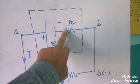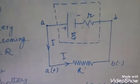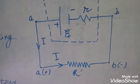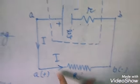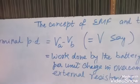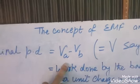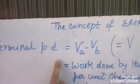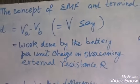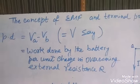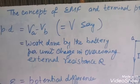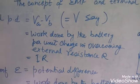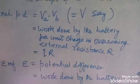Now if we apply Ohm's law: since the potential difference over the resistance R is V, which is Va minus VB — that is the terminal potential difference of the cell — by definition this terminal potential difference is the work done by the battery per unit charge in overcoming external resistance R. In accordance with Ohm's law, this potential difference must be equal to IR.